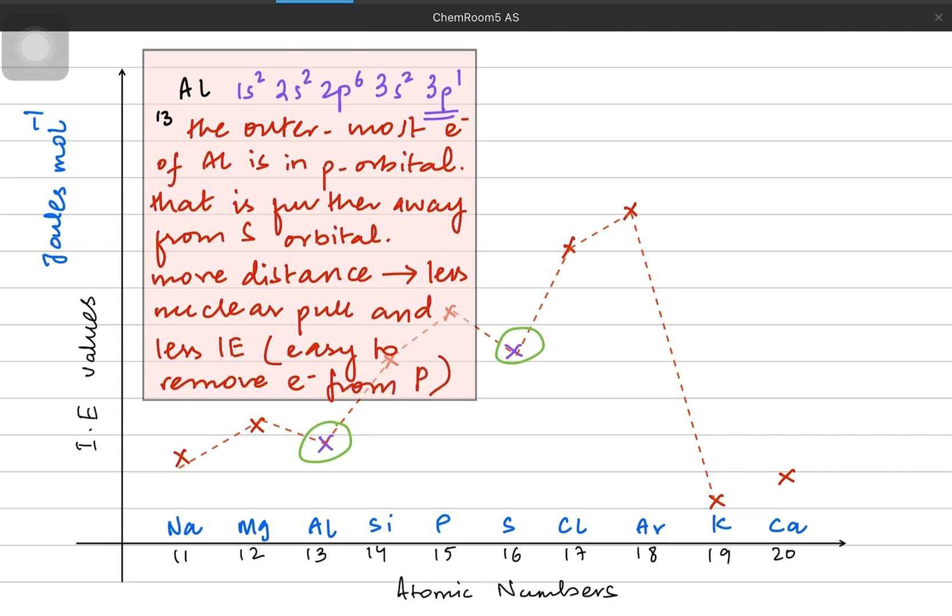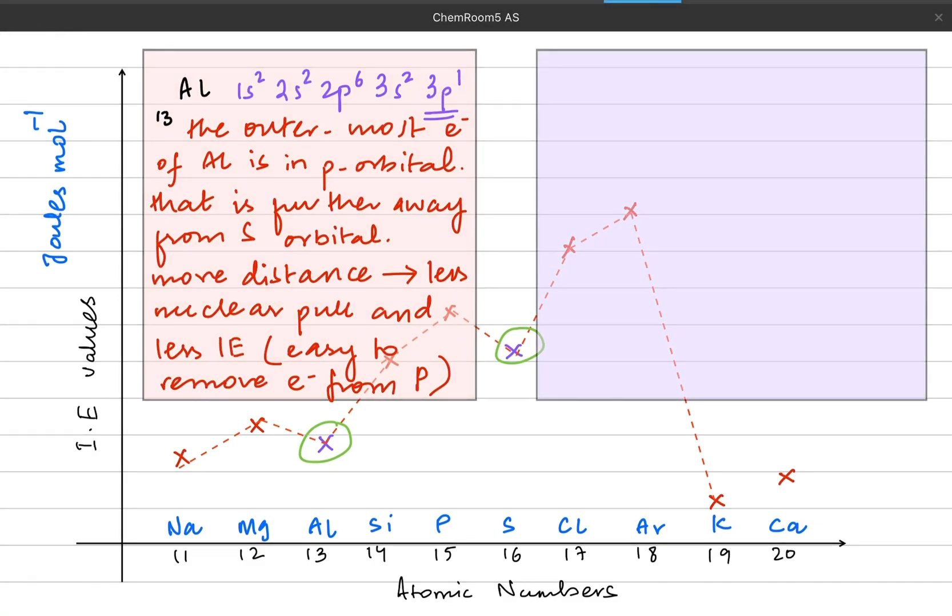More distant, less nuclear pull, and that is why lesser ionization energy.